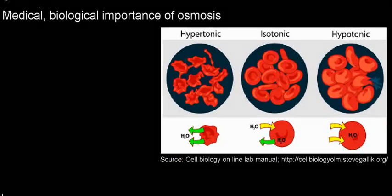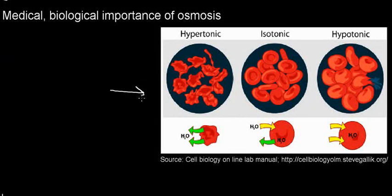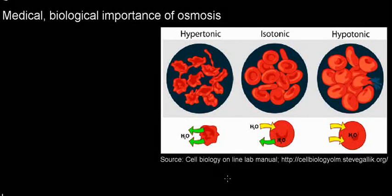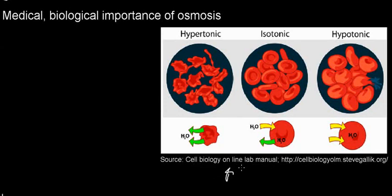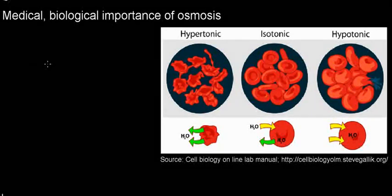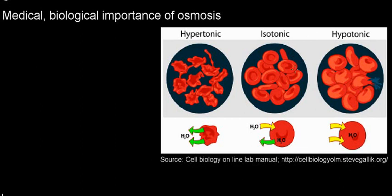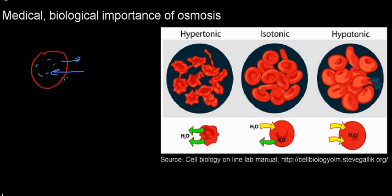What we have left to discuss is the medical or biological importance of osmosis. This depiction is from the Cell Biology Online Lab Manual — a really great website you may use in your second semester. What we're talking about is that blood cells have a specific shape, and being that they have semi-permeable or selectively permeable membranes, water or solvent can move in and out. So if this is my red blood cell, water molecules can move either in or out depending on the outside environment.